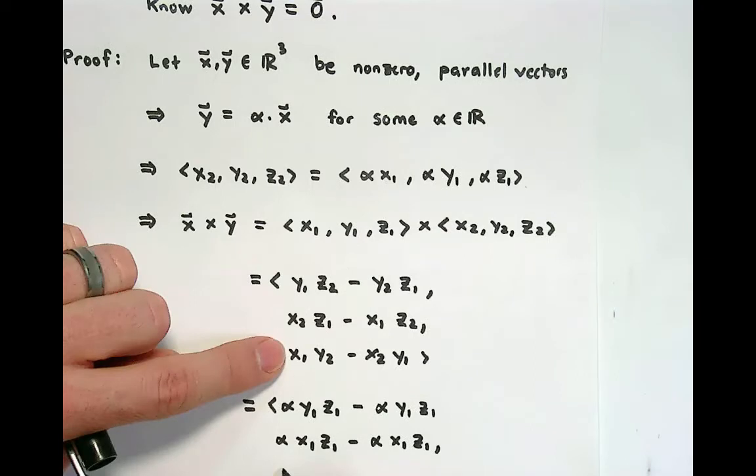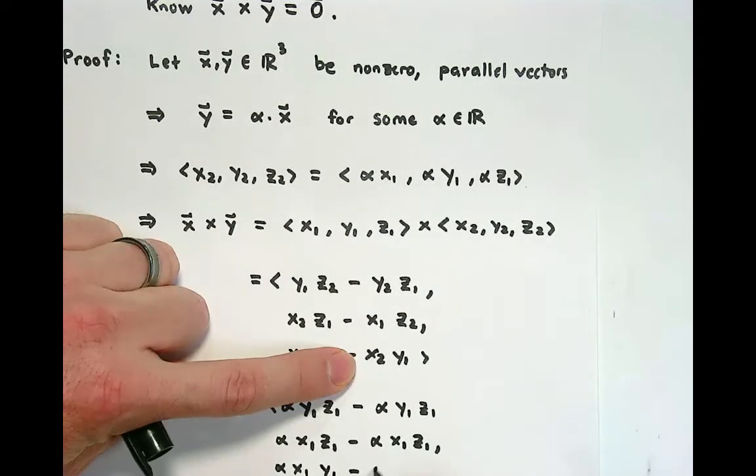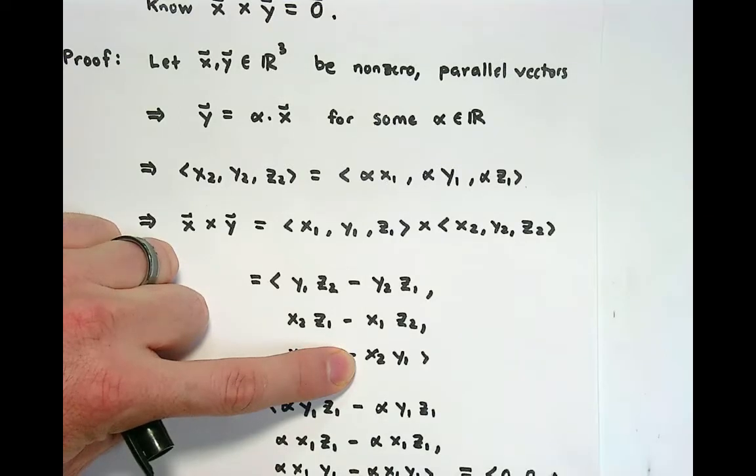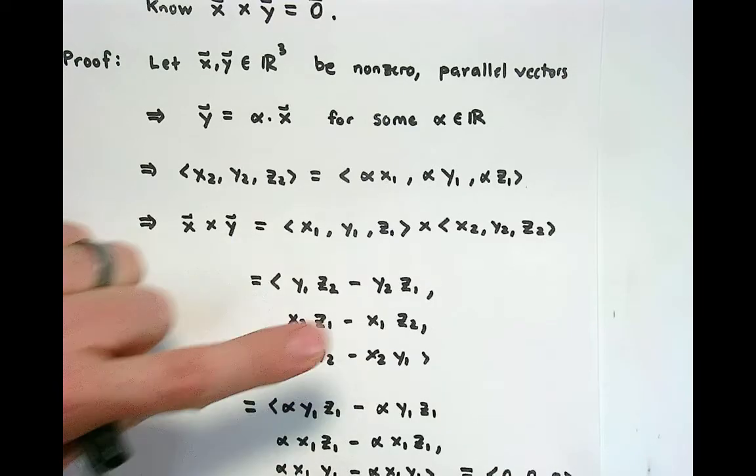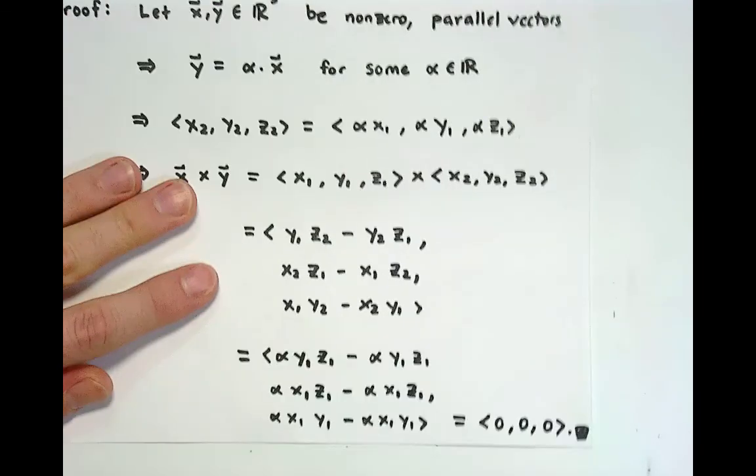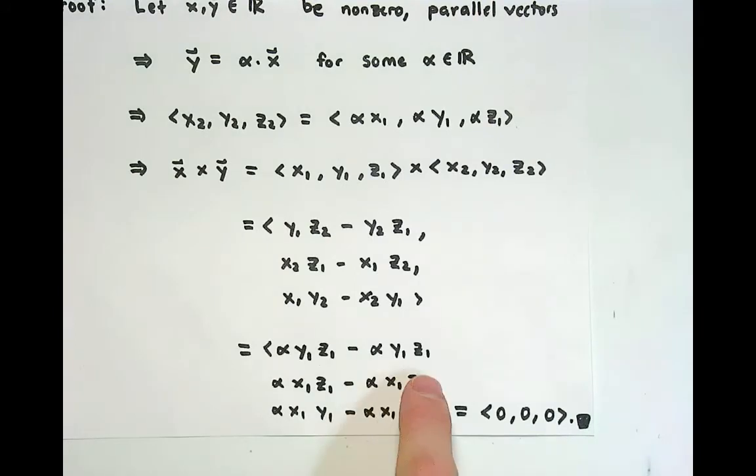Here we've got something like alpha x₁y₁ minus alpha x₁y₁. And indeed, what we've just confirmed is that for parallel vectors, we have a zero cross product where the zero cross product is a zero vector.